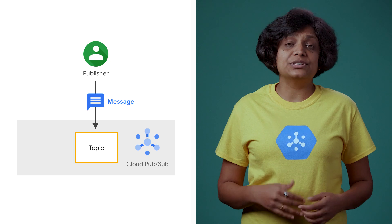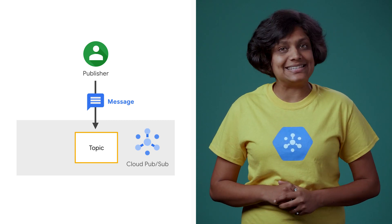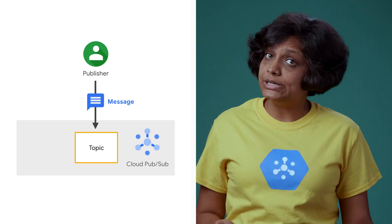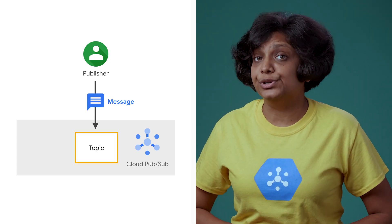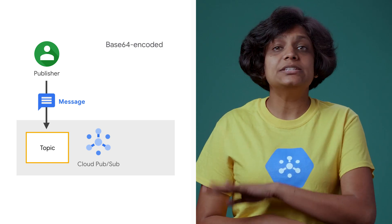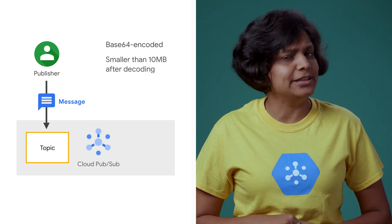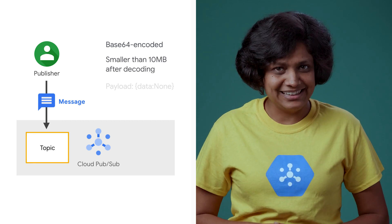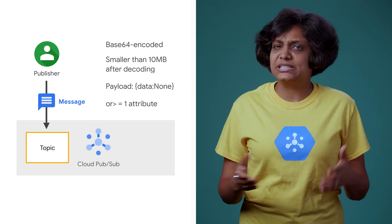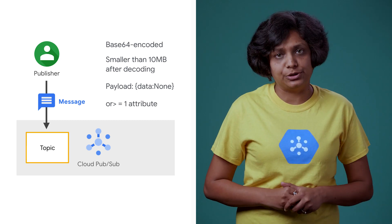A publisher application creates and sends messages to a desired topic on Cloud PubSub. Cloud PubSub offers at least once message delivery and best effort ordering to existing subscribers. While publishing messages to a topic, when using JSON over REST, the message data must be Base64 encoded. The entire request, including one or many messages, must be smaller than 10 MB after decoding. The message payload must not be empty — it must contain either a non-empty data field or at least one attribute.